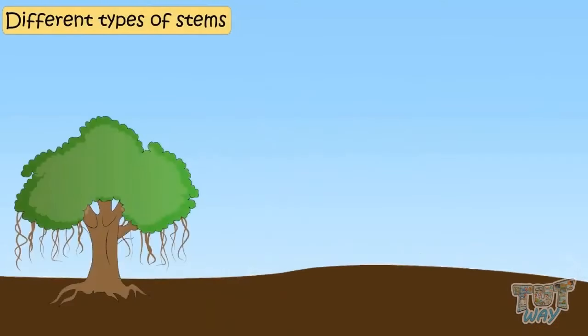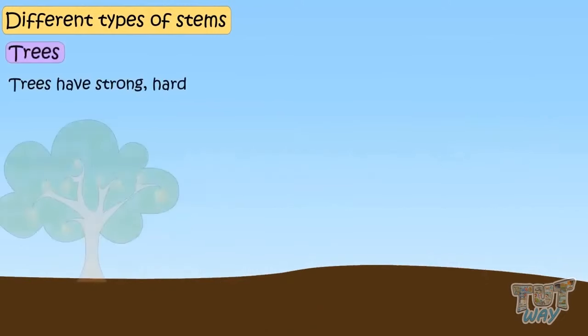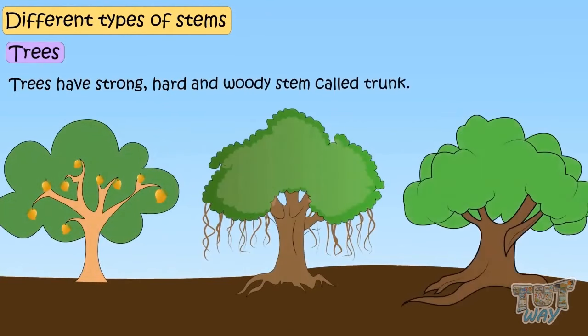Different types of plants have different types of stems. Big trees have strong, very hard, and woody stems, which are called trunks.